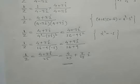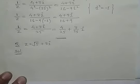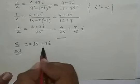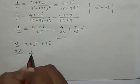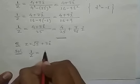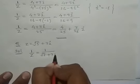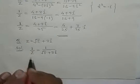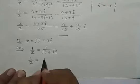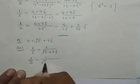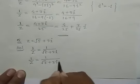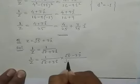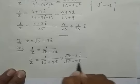One more question: z is equal to root 5 plus 3 iota. It is a complex number, and if we have to find the multiplicative inverse, then 1 upon z is equal to 1 upon root 5 plus 3 iota. By rationalization, we multiply and divide by root 5 minus 3 iota.